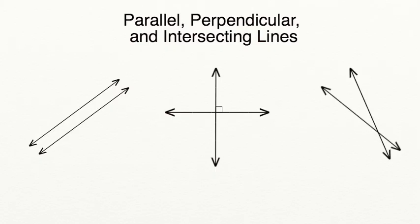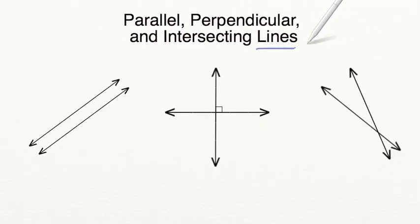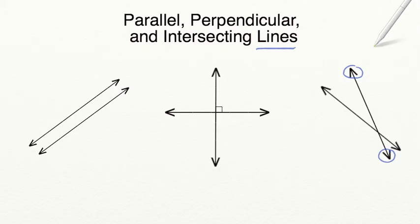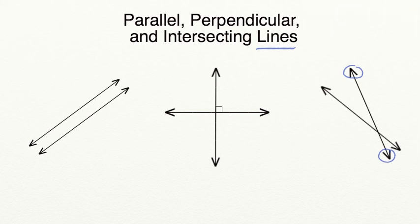We are going to begin today by discussing lines. Remember, you'll notice a line because it will be written having an arrow at each end, showing that it's going to go on continuously in either direction. A line is always straight and two-dimensional — it never has wiggles or curves to it.